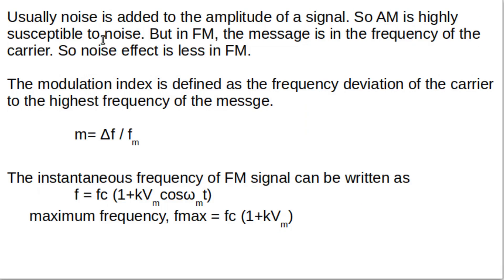A noise signal is an unwanted signal added to a transmitted signal. Such noise is usually added to the amplitude of a signal, so when noise affects a signal it appears in its amplitude. The noise is added to the amplitude of an AM signal, and since our message information is carried in the amplitude of the AM signal, noise will modify or destroy that information.